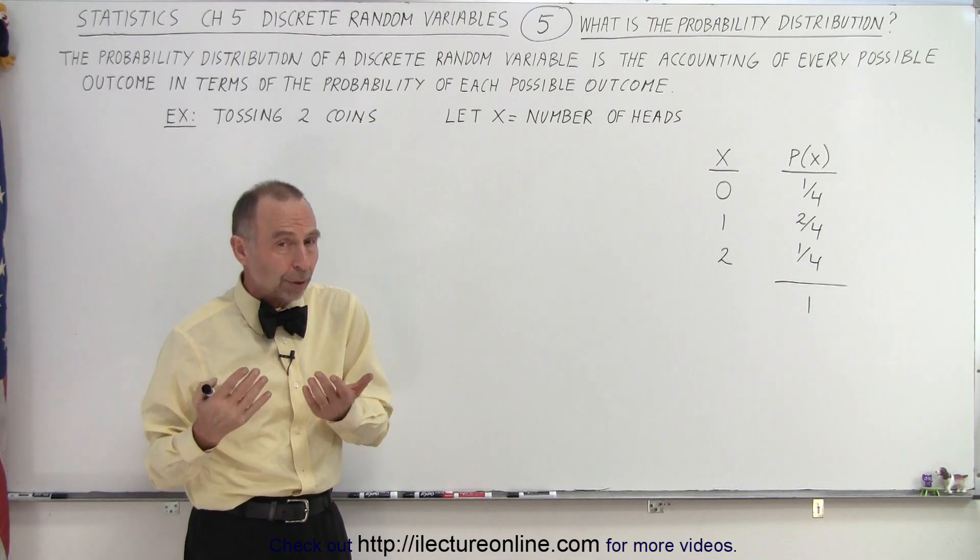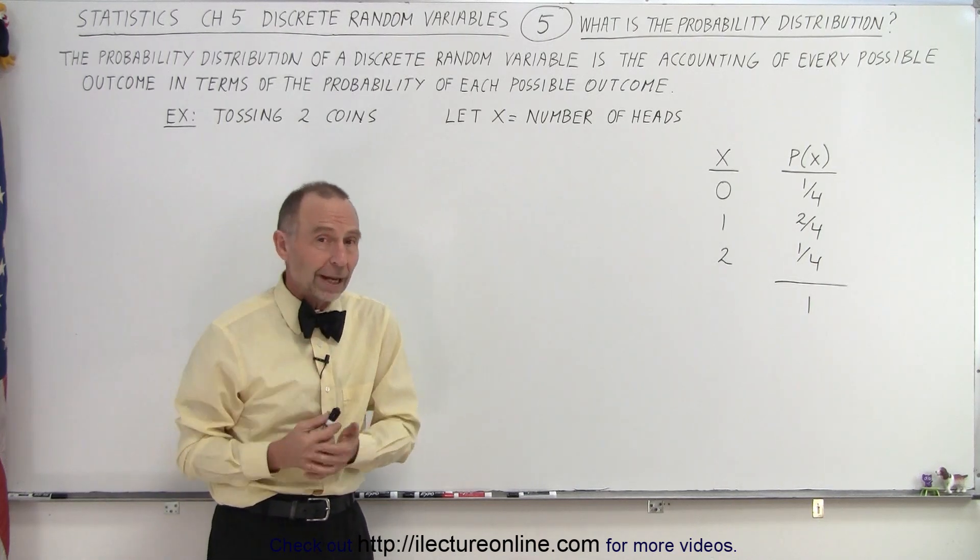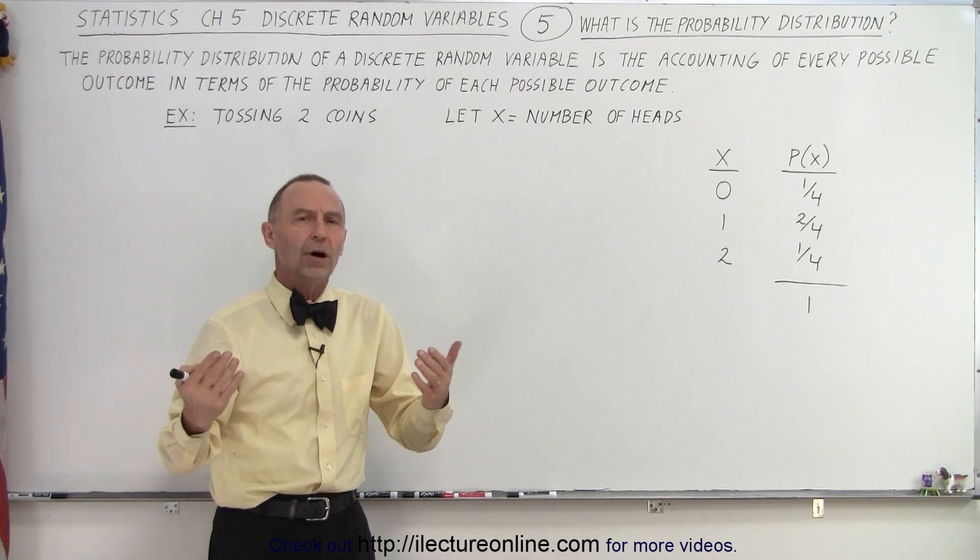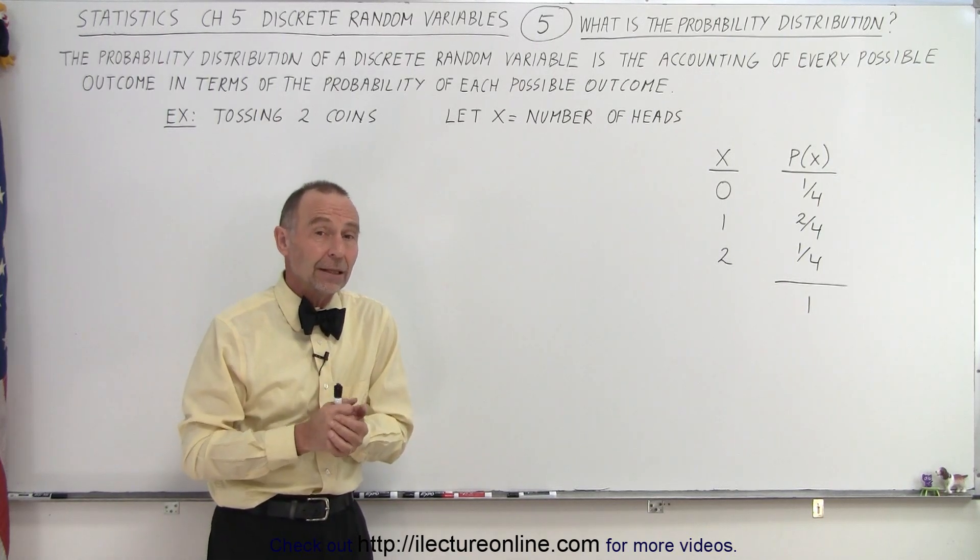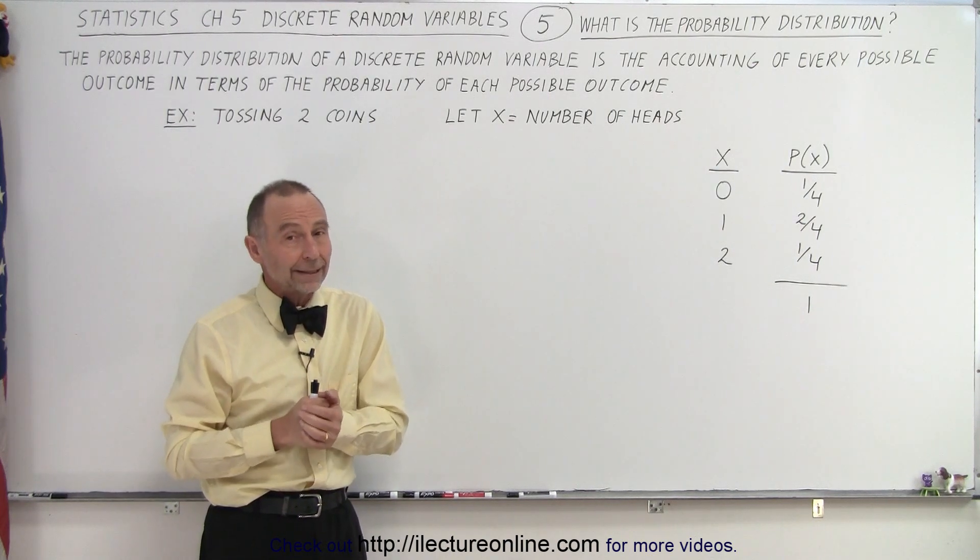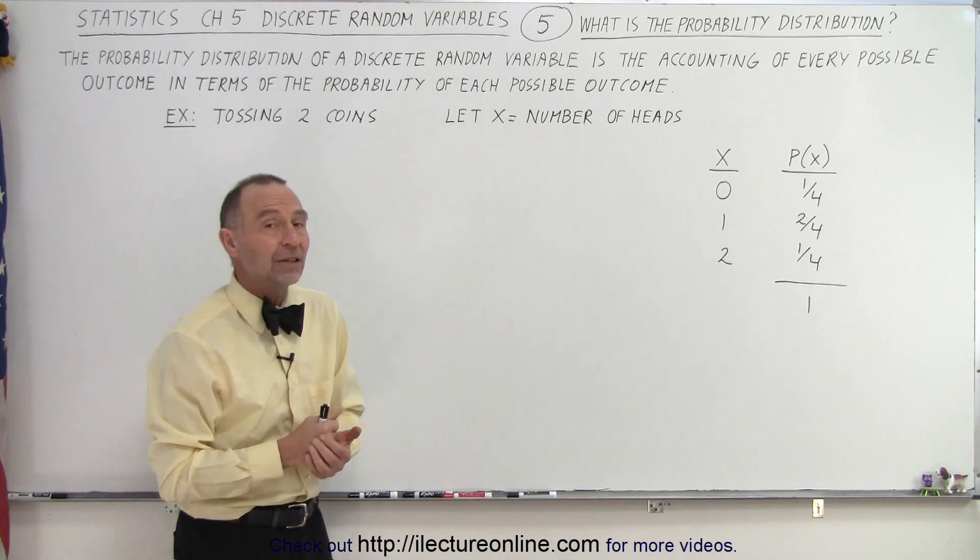And of course, it's a very important part of learning how to deal with discrete random variables, because we want to see a visualization of how the outcome can be and what the probability will be of each of those particular outcomes. So that is how it's done, and that's what we mean by the probability distribution.